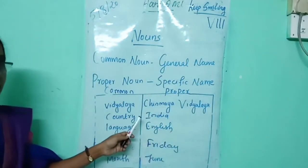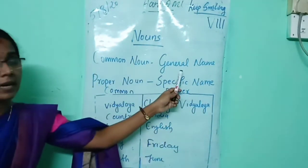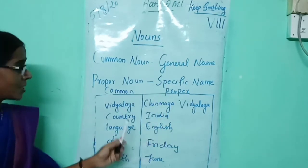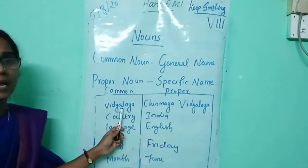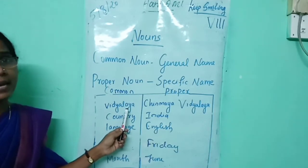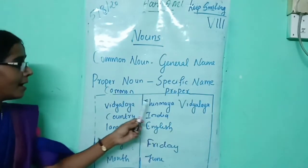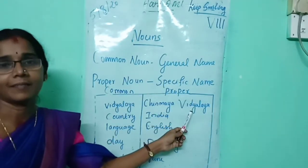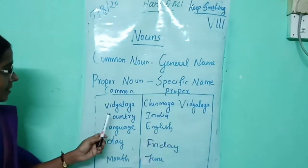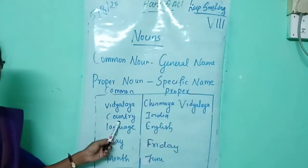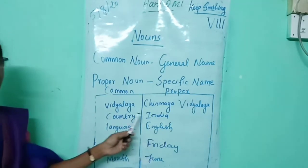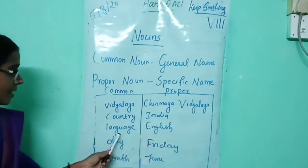Let's see this example. Remember: common noun means general name; proper noun means specific name. First one is Vidyalaya — this is common, it may be any Vidyalaya. Next one, Chinmaya Vidyalaya — our school. Next one, country is common, India is proper.